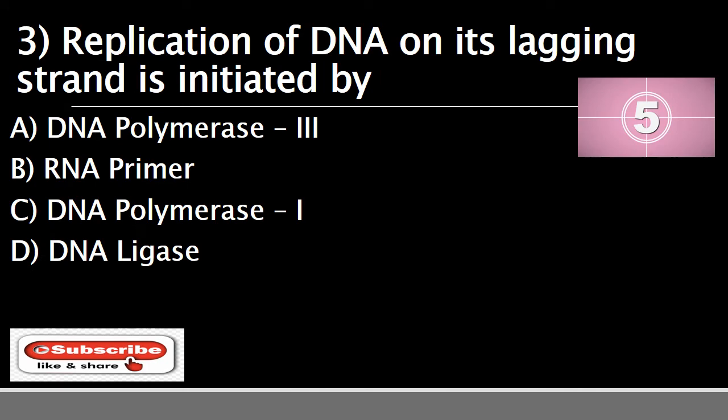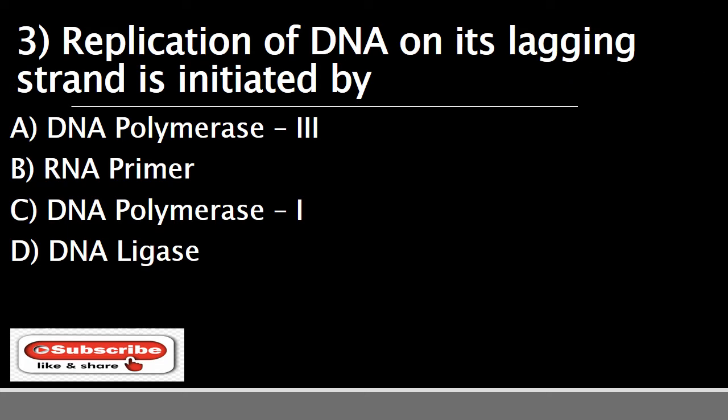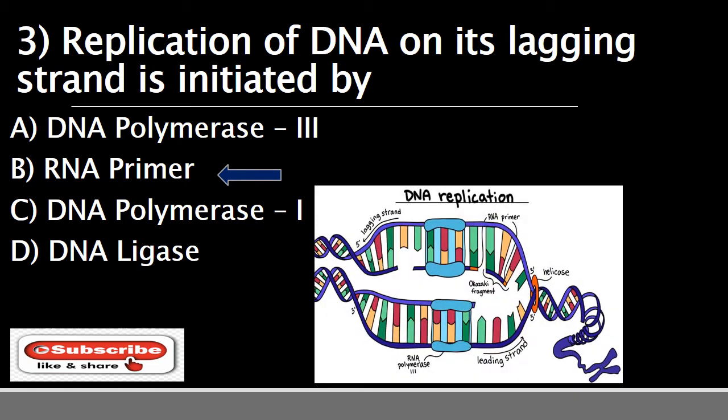Question number three: replication of DNA on its lagging strand is initiated by — the options are A) DNA polymerase 3, B) RNA primer, C) DNA polymerase 1, or D) DNA ligase. The correct answer is B) RNA primer.